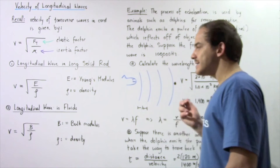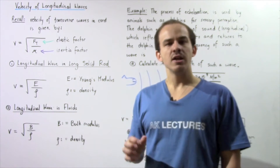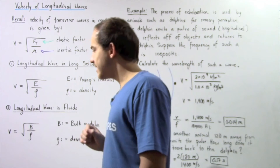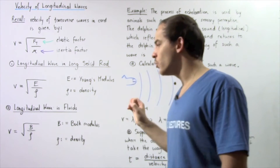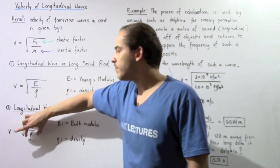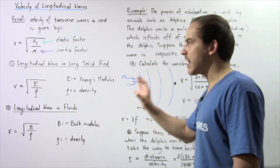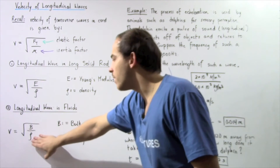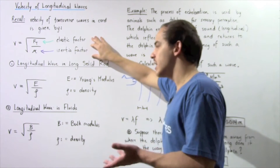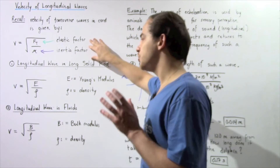Case number two: what about the velocity of longitudinal waves when they propagate through fluids such as gases and liquids? The velocity of a longitudinal wave in fluids is given by taking the square root of the bulk modulus divided by the density of the fluid. Once again, the top portion of our fraction is the elastic factor and the bottom portion is the inertia factor, and our velocity depends on the type of fluid we are using.